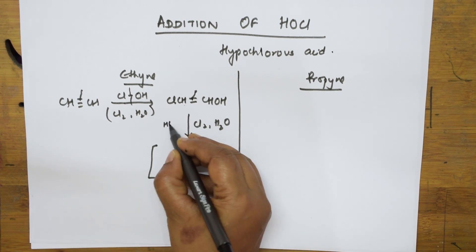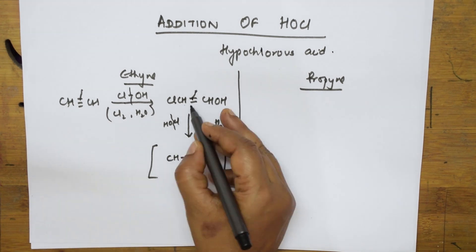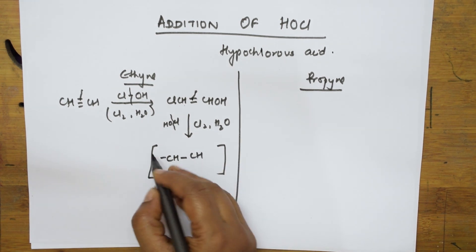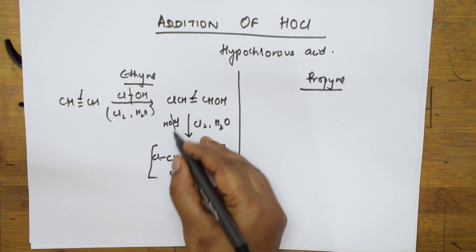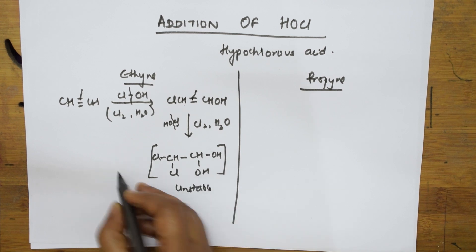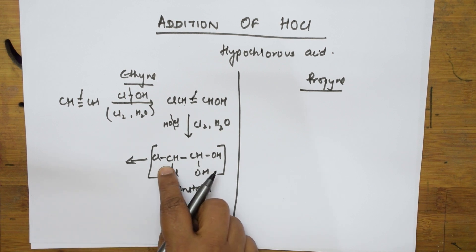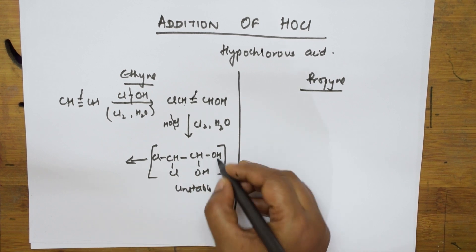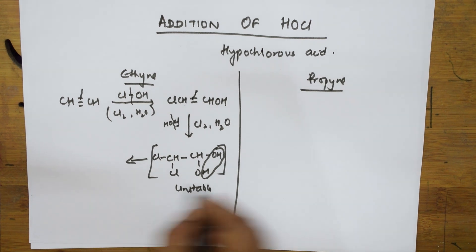When a second HOCl is introduced, the remaining double bond breaks. I get a compound with two Cl atoms on one carbon and two OH groups on the other carbon — this is unstable in nature. From this unstable compound, water is eliminated.